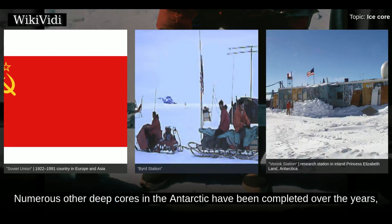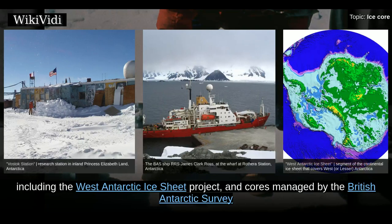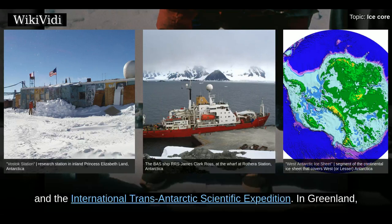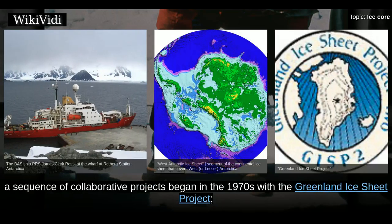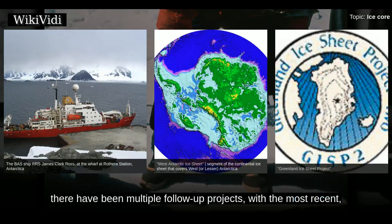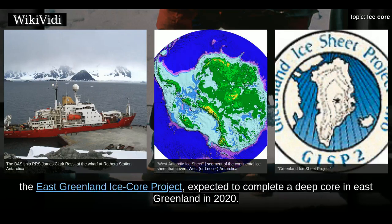Soviet ice drilling projects in Antarctica include decades of work at Vostok Station, with the deepest core reaching 3,769 meters. Numerous other deep cores in the Antarctic have been completed over the years, including the West Antarctic Ice Sheet Project and cores managed by the British Antarctic Survey and the International Trans-Antarctic Scientific Expedition. In Greenland, a sequence of collaborative projects began in the 1970s with the Greenland Ice Sheet Project, with the most recent being the East Greenland Ice Core Project, expected to complete a deep core in East Greenland in 2020.